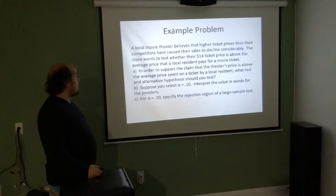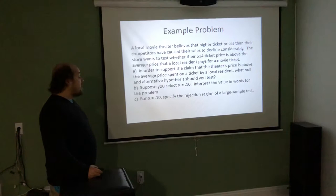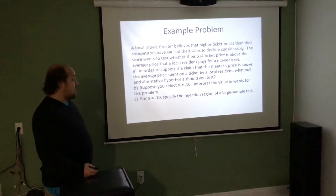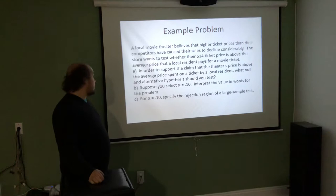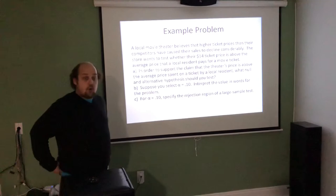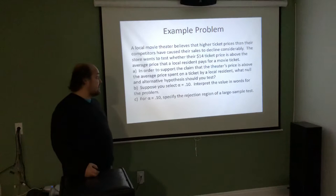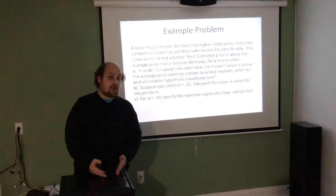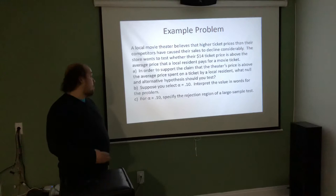Example: A local movie theater believes higher ticket prices caused sales to decline. They want to test whether their $14 ticket price is above the average price a local resident pays. The null is H₀: μ = 14, and the alternative is HA: μ < 14 — that their price is too high and the true population mean is lower. With alpha = 0.10, this is a left-tailed test.